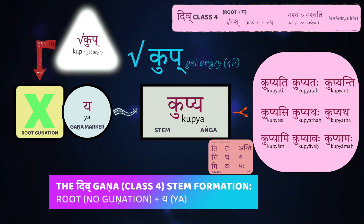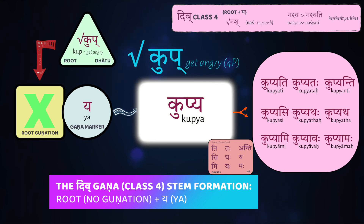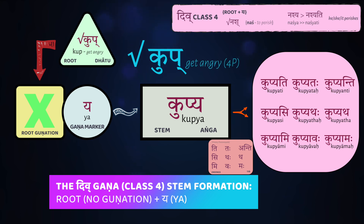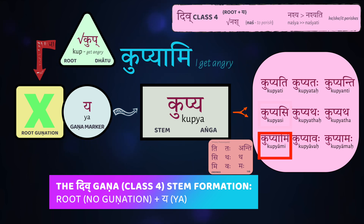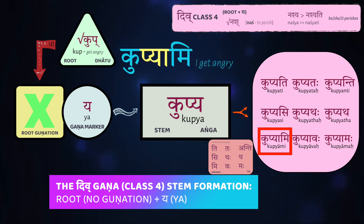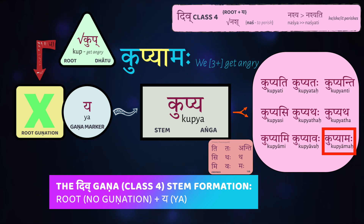One common root is kūp, which means to get angry or upset. Kūp turns first into the stem kūpya, and then you add your endings — your parasmaipada endings here. Kūpyati — he gets angry. Kūpyasi — you get angry. Now notice here, like with the class one verbs, we're going to have an elongation of the 'a' in the first person. So kūpyāmi — I get angry. Kūpyāvaḥ — the two of us get angry. Kūpyāmaḥ — we all get angry, we all get upset.